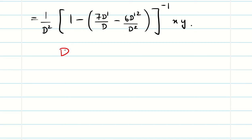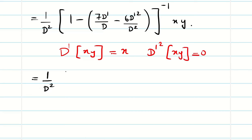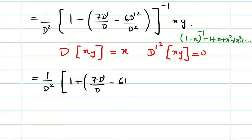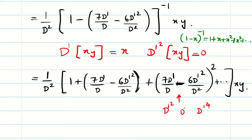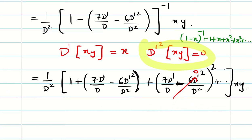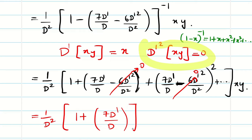Before solving, we check the weakness: d dash of x y is simply x, and d dash square of x y is 0. So all terms involving d dash squared or higher are 0. Applying the formula (1 minus x) power minus 1 equals 1 plus x plus x square, etc., I get (1/d square) times (1 plus (7 d dash/d minus 6 d dash squared/d squared) plus higher powers, etc.) of x y. Since d dash squared of x y is 0, the squared term and beyond all become 0, so only two terms exist: 1 and the 7 d dash/d term.